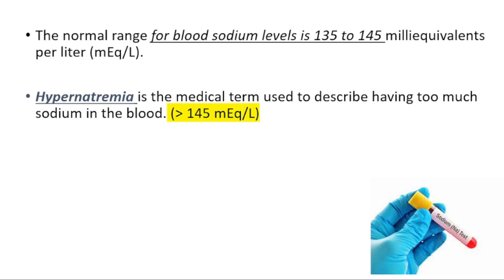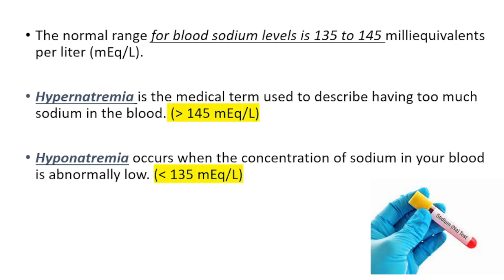Hypernatremia is the medical term used to describe having too much sodium in the blood. We will call it hypernatremia when it's over 145, and when it's lower than 135 we will call it hyponatremia. It occurs when the concentration of sodium in your blood is abnormally low.